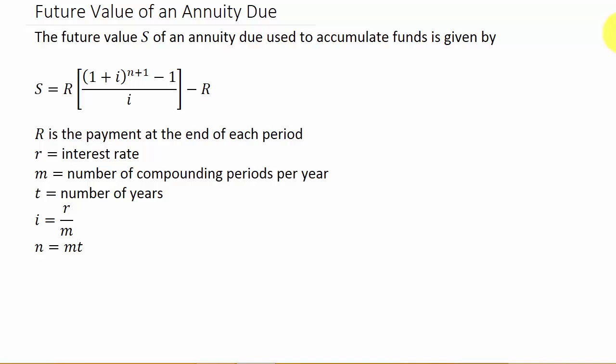This video we're going to look at future value of an annuity due. I've done a video on future value of an ordinary annuity. An ordinary annuity is where the payments are made at the end of each period, and the frequency of the payments is the same as the frequency of compounding the interest.